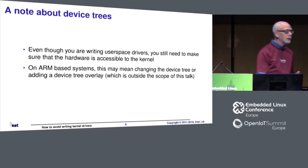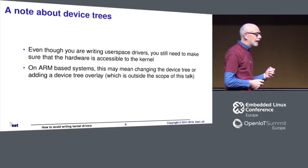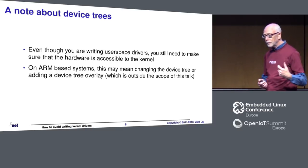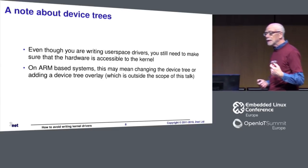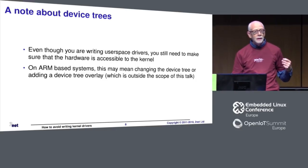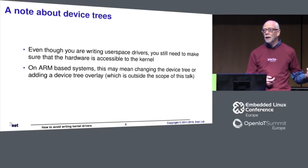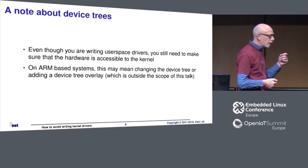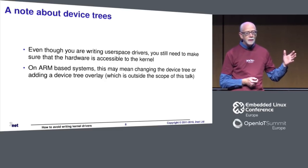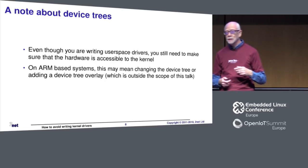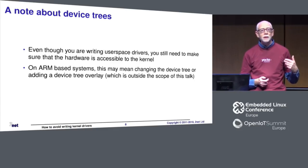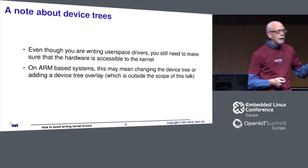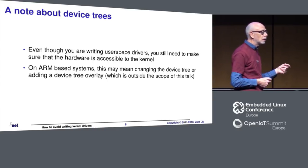A note about device trees. Since we're mostly talking to an embedded audience, if you're working on ARM platforms you'll need to tell the kernel where the hardware is, which you do through a device tree. As part of this exercise, you still need to write the device tree or device tree overlay to give the kernel access to the particular hardware you're targeting.